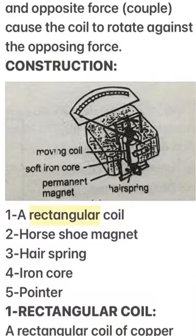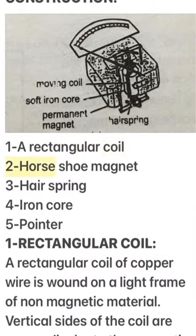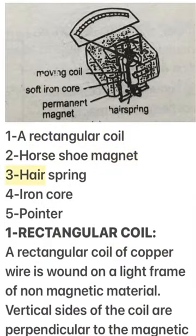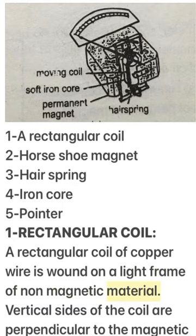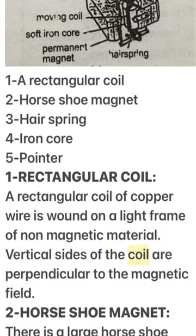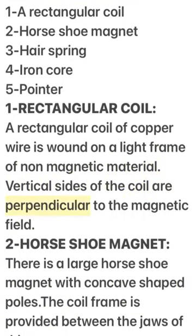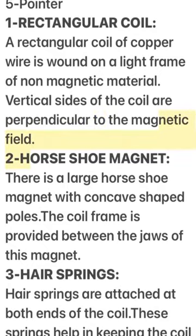Construction: 1. A rectangular coil. 2. Horseshoe magnet. 3. Hairspring. 4. Iron core. 5. Pointer. A rectangular coil of copper wire is wound on a light frame of non-magnetic material. The vertical sides of the coil are perpendicular to the magnetic field.